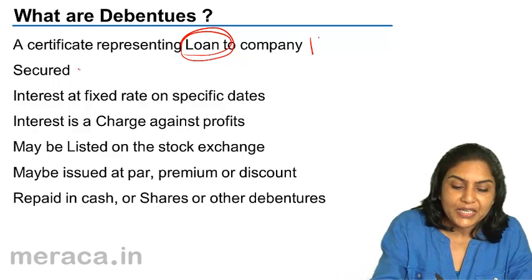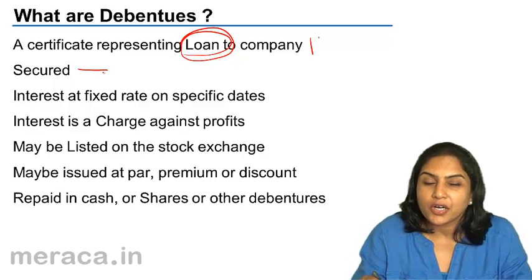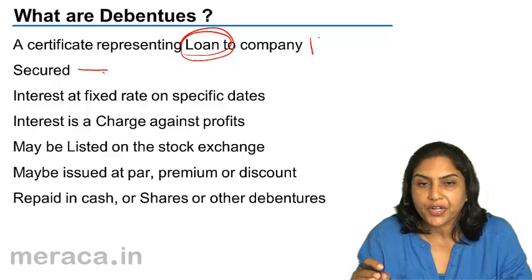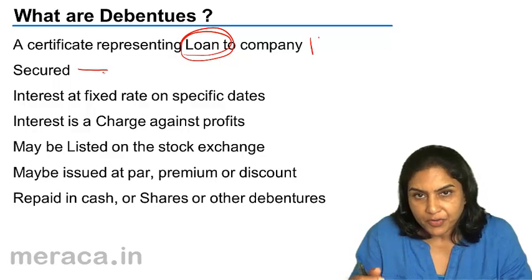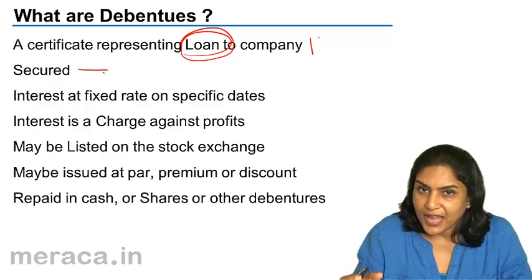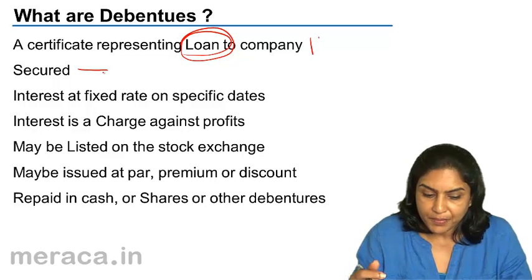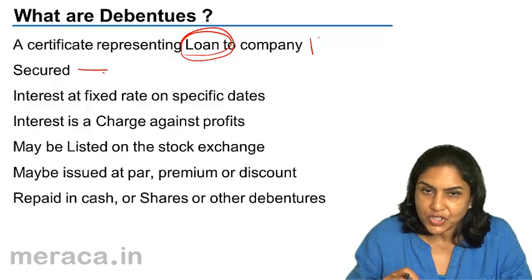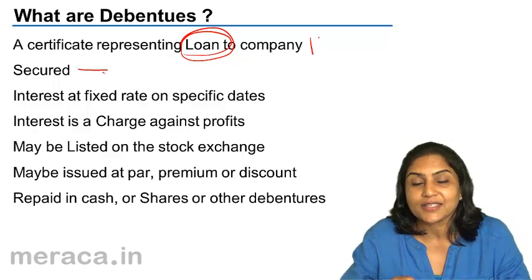Debentures are usually secured. It could be a specific charge or a floating charge. Suppose debentures are issued against the security of a building — it would mean that in the event of liquidation, when the building is sold, the proceeds realized from the sale of the building will go first to the debenture holders to repay the debentures.